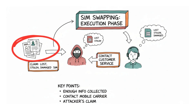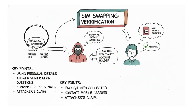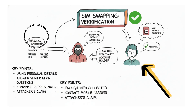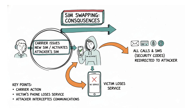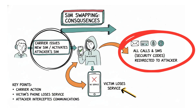Once attackers have collected enough information about the victim, they move on to executing the SIM swap. They contact the mobile carrier's customer service and typically claim that the SIM card was lost, stolen, or damaged. Using the personal details they gathered earlier, they successfully answer verification questions and convince the support representative that they are the legitimate account holder. As a result, the carrier issues a new SIM card or activates the attacker's SIM with the victim's phone number. At this stage, the victim's phone suddenly loses network service, while all incoming calls and SMS messages, including security and verification codes, are redirected to the attacker.